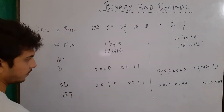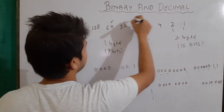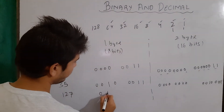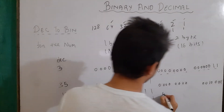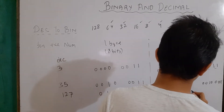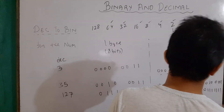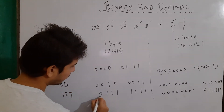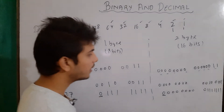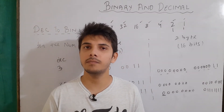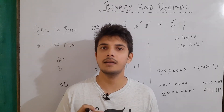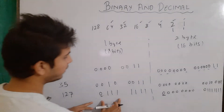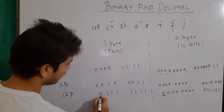Now let's represent 127. Adding all positions from 1 to 64 gives 127. So the 8-bit binary is 0 1 1 1 1 1 1 1, and the 16-bit is 0 0 0 0 0 0 0 0 0 1 1 1 1 1 1 1. The most left-hand bit is the signed bit — if it is 0 the number is positive, if it is 1 the number is negative. So that signed bit is not included in the value range; only the remaining 7 bits are used.